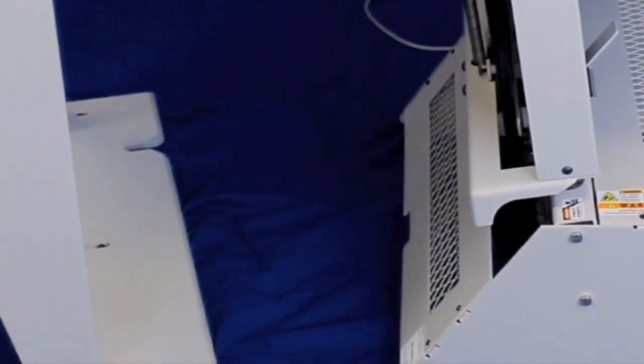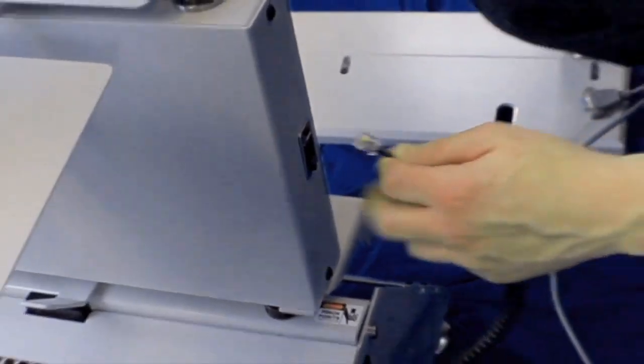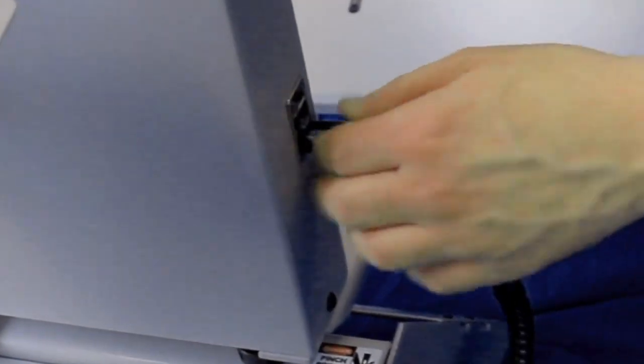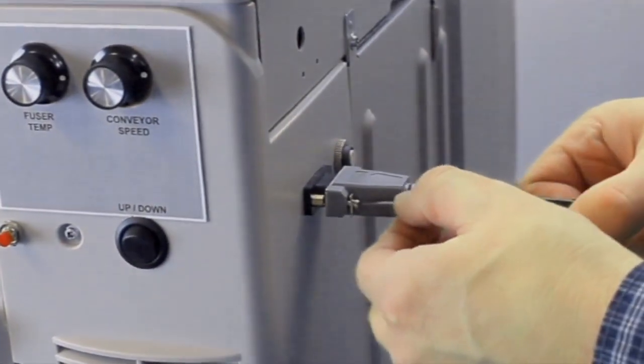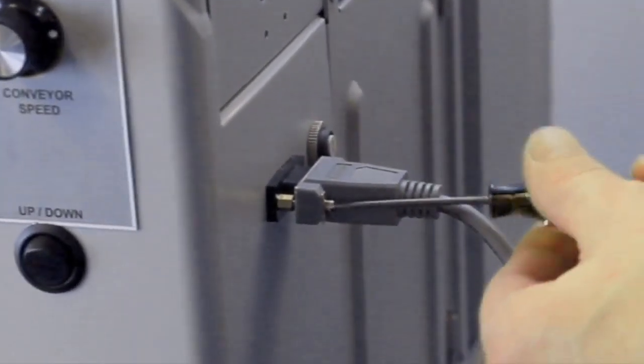Move the feeder close to the printer. Plug in the second end of the elevator interface phone cord cable. Plug in the feeder serial communication cable into the printer and tighten both screws with a number one flat head screwdriver.